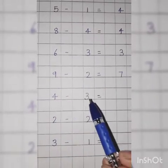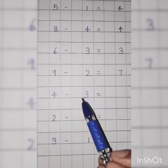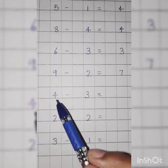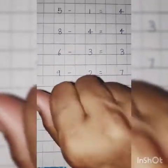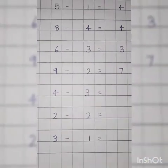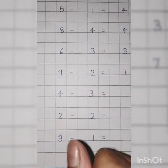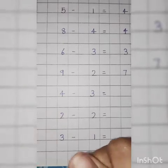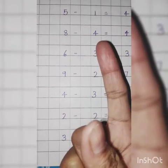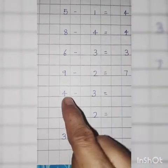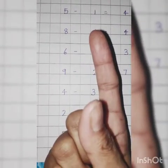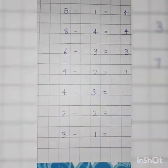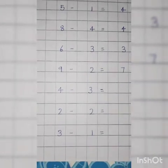4 minus 3. Throw 3. Count till 4. What comes after 3? 4. How many fingers are left? 1. So, answer is 1.